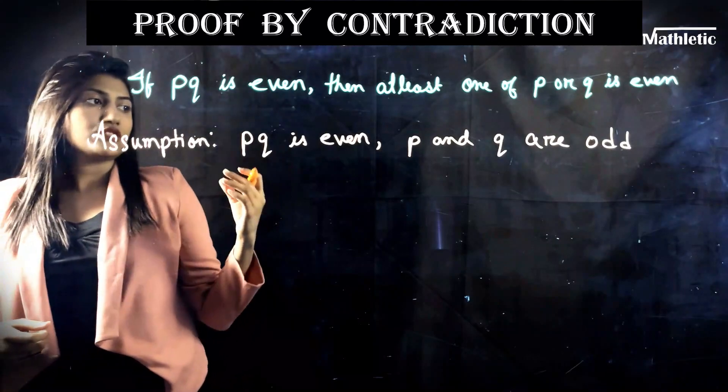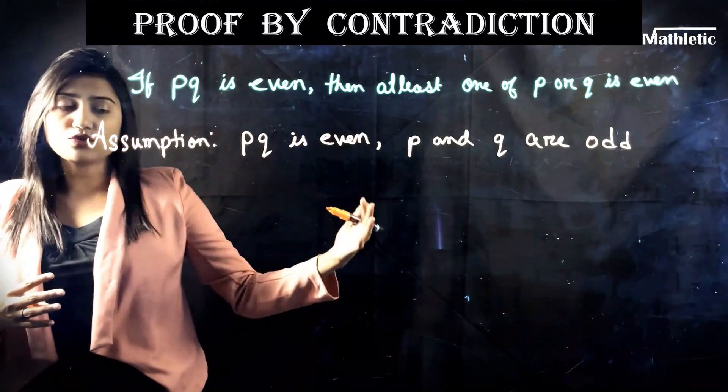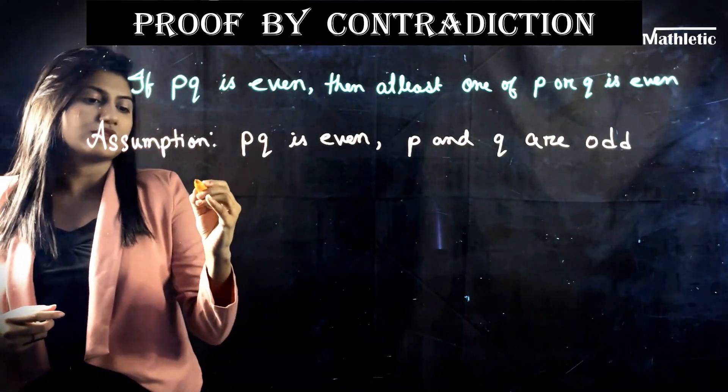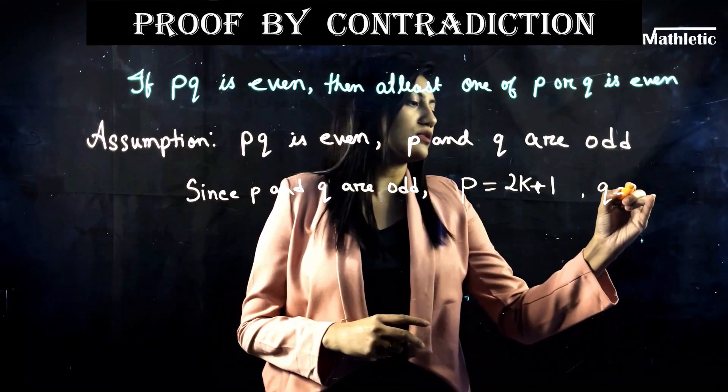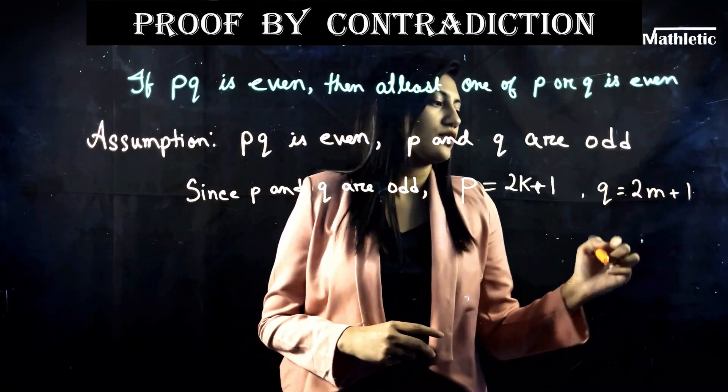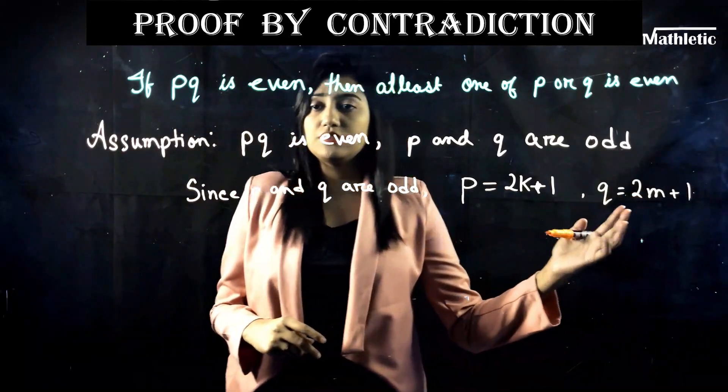So I will assume that if pq is even, p and q are odd. Since p and q are odd I need to replace that with a variable which is 2k+1 or 2m+1. You need to use different variables here. So p = 2k+1 and let q = 2m+1 where k and m are integer values.